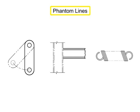Phantom lines are composed of alternating one long and two short dashes, evenly spaced, with a long dash at each end.